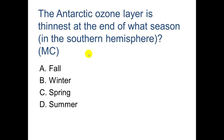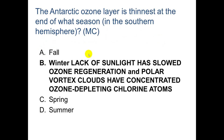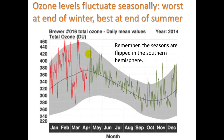The Antarctic ozone layer is thinnest at the end of what season in the Southern Hemisphere? Winter — because in winter you have a lack of sunlight, which slows ozone regeneration, and the polar vortex clouds concentrate ozone-depleting chlorine atoms. When sunlight returns in spring, that's when the ozone layer is at its worst, but sunlight then begins to help regenerate ozone. In March, the end of summer, it's at its best; in September, the end of winter in the Southern Hemisphere, it's at its thinnest.